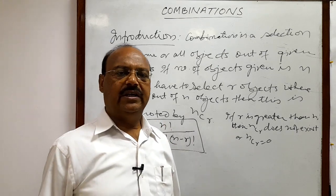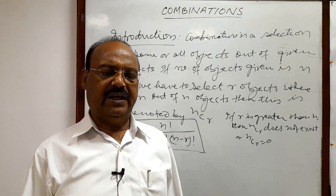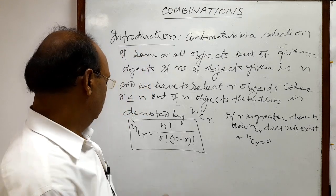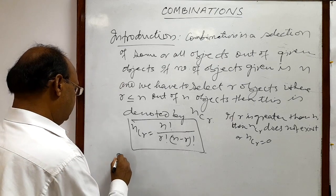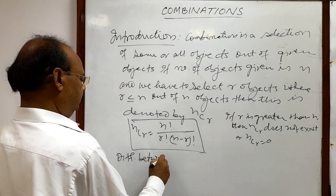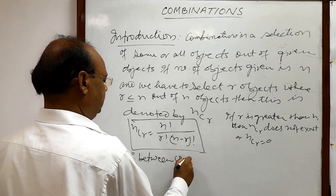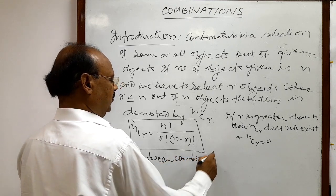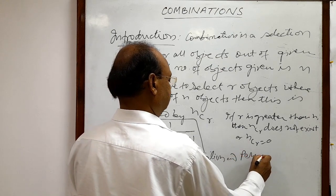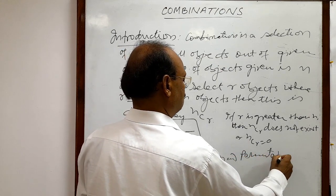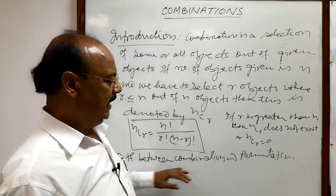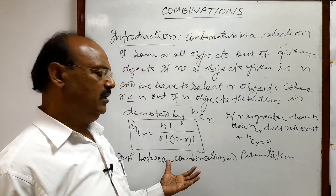Now there is a basic difference between permutation and combination. Let us look at an example to make this difference very clear.